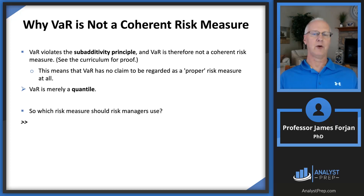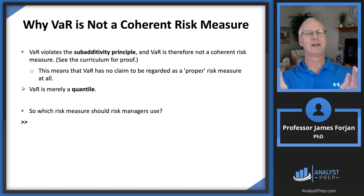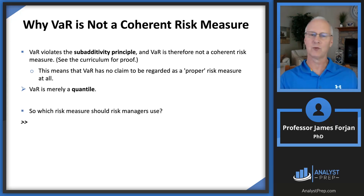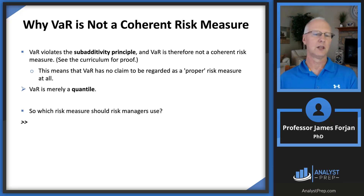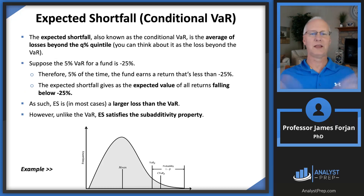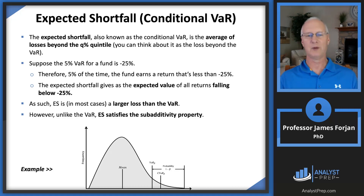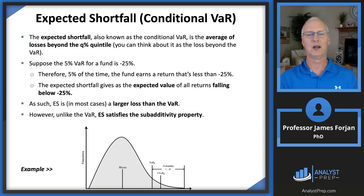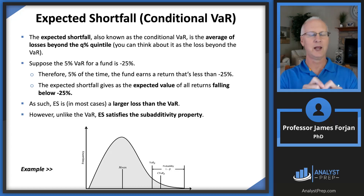Here's the problem with value at risk: it violates the sub-additivity principle — but only when the distribution is not normal. When distributions have fat tails, as we know they do, then value at risk is not a coherent risk measure. Just when we think we have something we like, we find it's not perfect. This really captures the sense of what you get as a risk manager: you have to identify the risk, quantify the risk, and manage the risk. We're always learning — risk management principles are dynamic and always changing.